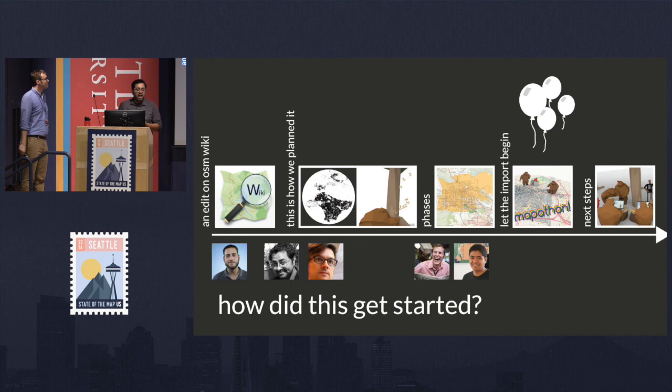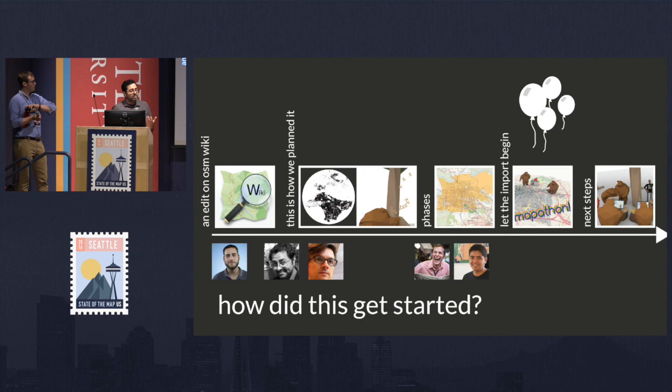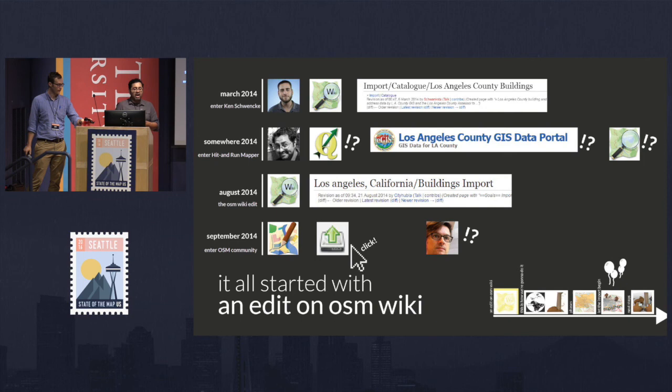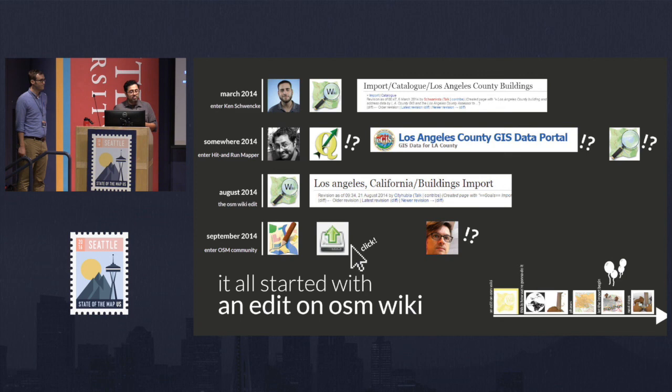So how did this get started? It's going to be broken down to a couple of parts. It all started with an OpenStreetMap wiki. We'll talk about how we planned it, how we did it in phases, how we did mapathons and tutorials. It started in 2014 with Ken Schwenke, who used to work for the LA Times. He posted something because LA County has a GIS department that published all the county outlines for the whole county — three million buildings with heights and elevation attributes — but he just posted that on the wiki and it sort of just lingered around.